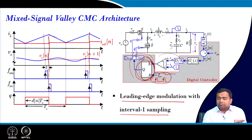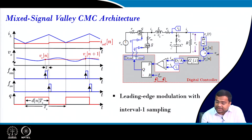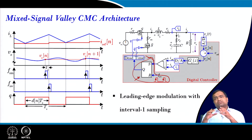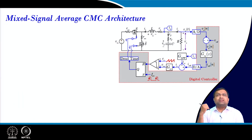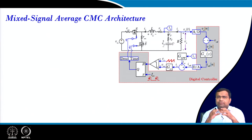You can use the same hardware — just a replacement of one block — to represent valley current mode control. If you want a generic peak or valley implementation, you simply change the algorithm and the clock to use the same architecture for both. If you can implement peak and valley, you can also implement average current mode control. In average current mode control we show the averaging technique in the analog domain, but there are many advanced digital architectures that can easily do average current mode control fully digitally.